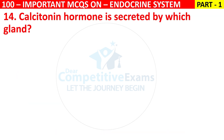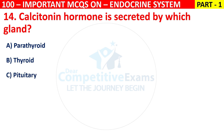Q14. Calcitonin hormone is secreted by which gland? Your options are parathyroid, thyroid, pituitary, or adrenal.